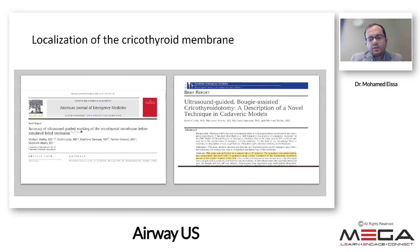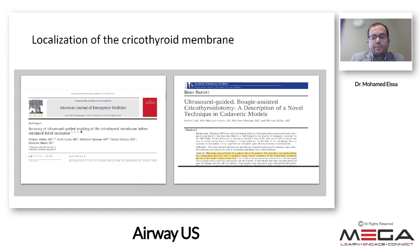Interesting studies have shown that using ultrasound has better success rates in identifying the cricothyroid membrane. This can be done either by pre-identification and marking of the cricothyroid membrane, as shown in the study by Mallin and colleagues, or by dynamic scanning during the cricothyroidotomy procedure. I'll show you how to do this later on.